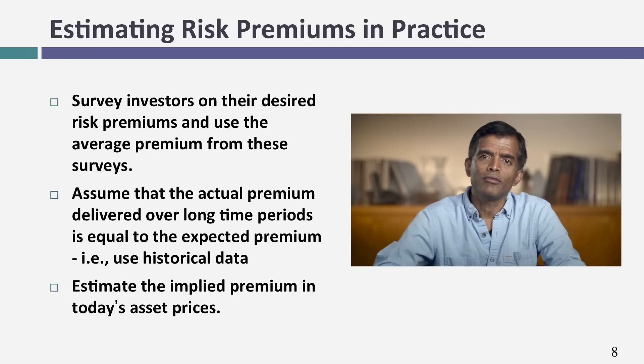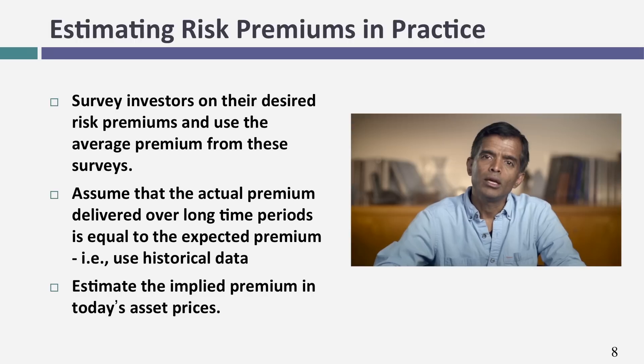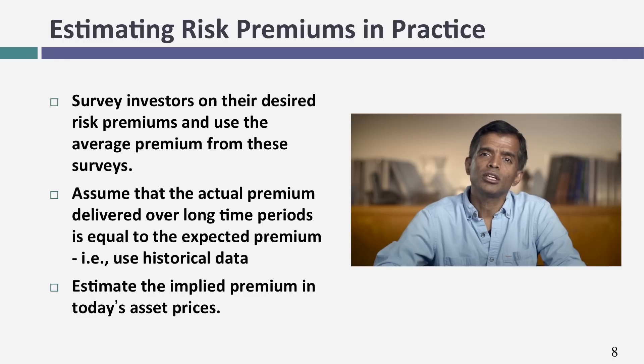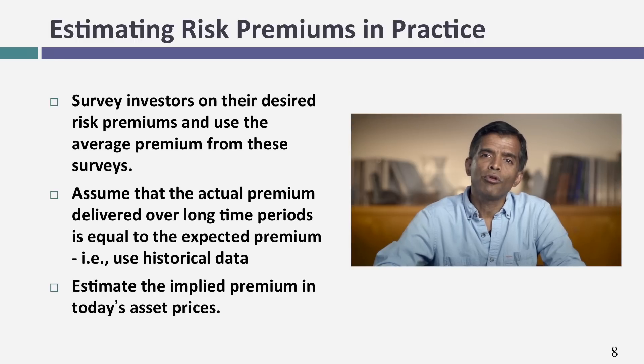There are three basic ways in which people estimate risk premiums. The first is to do surveys — not of all investors, but of subsets of investors. The second is to look at the past — historical data — to see what kind of premium you'd have earned investing in stocks as opposed to T-bonds, and use that premium. The third is to get a forward-looking premium that reflects the world we live in. I won't cover the third approach in this session, but we'll do at least the first two.